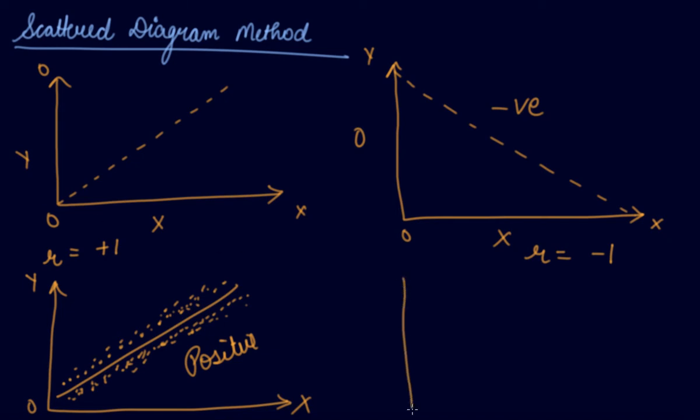You get a line from downward sloping, from here to here, from y to x. You get a line which means they are negatively correlated. And you get the points, which means these are negatively correlated and they have the negative correlation.